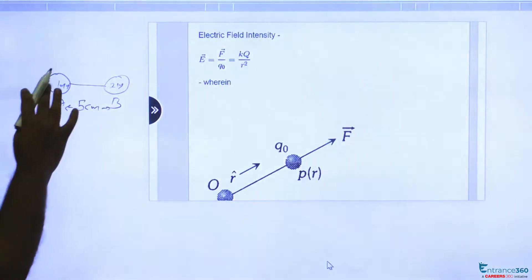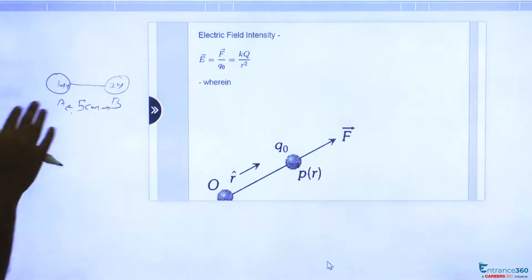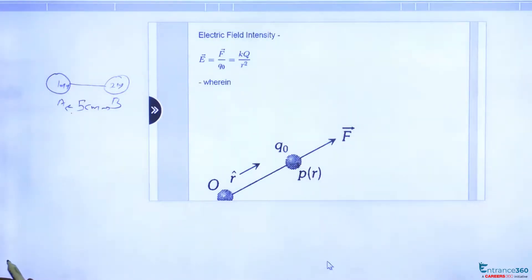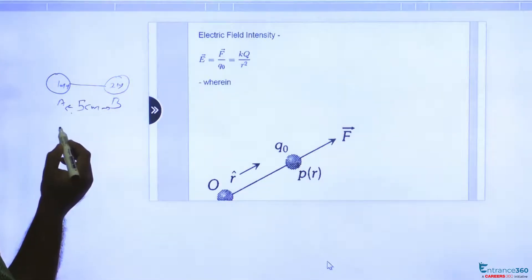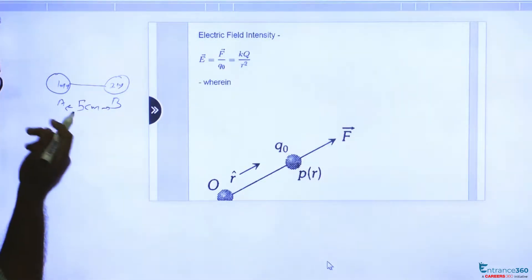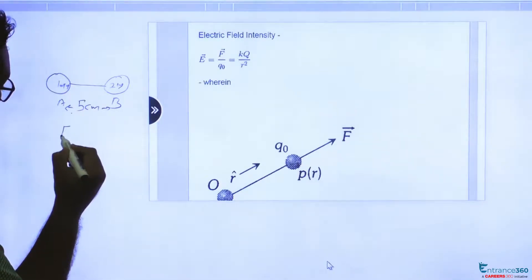Now if these are connected by a conducting wire, potential will be same for both. We are using the concept of electric field here. Electric field E